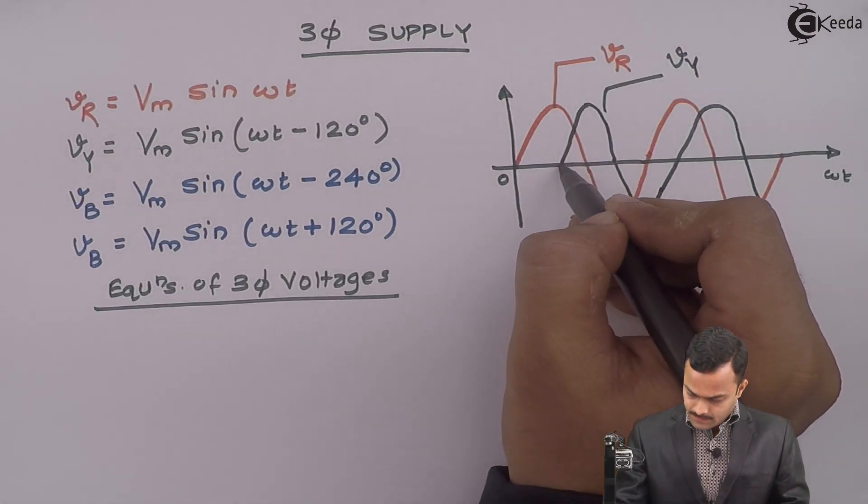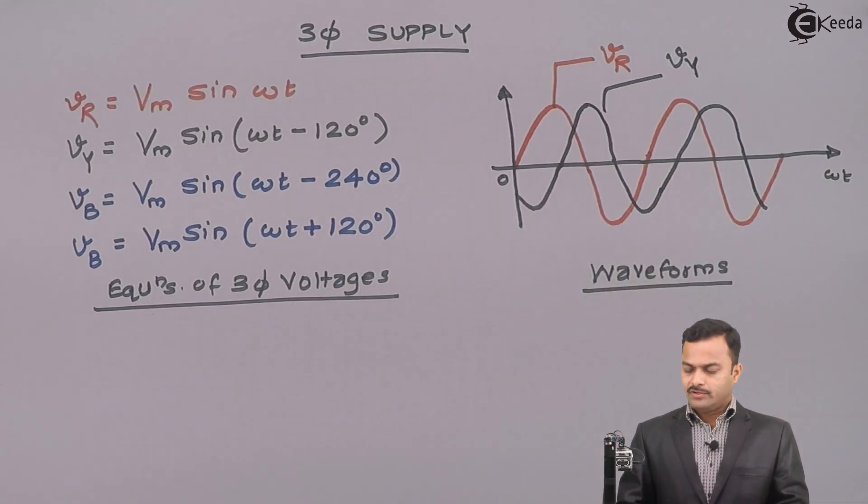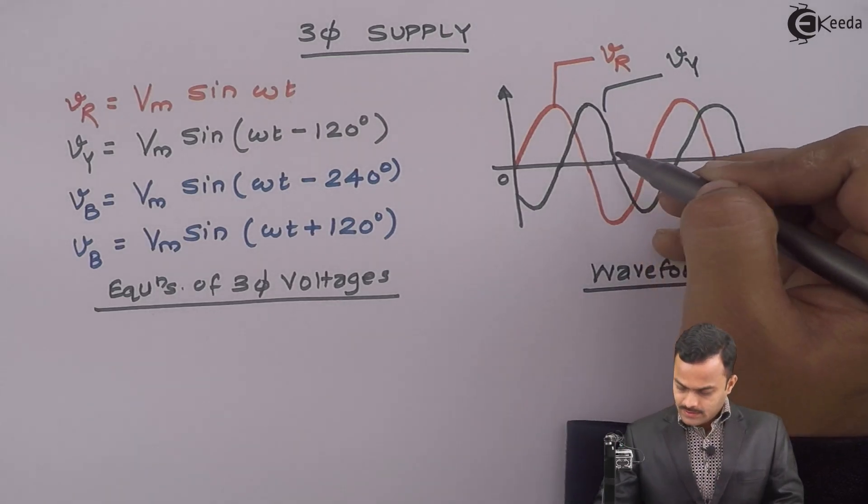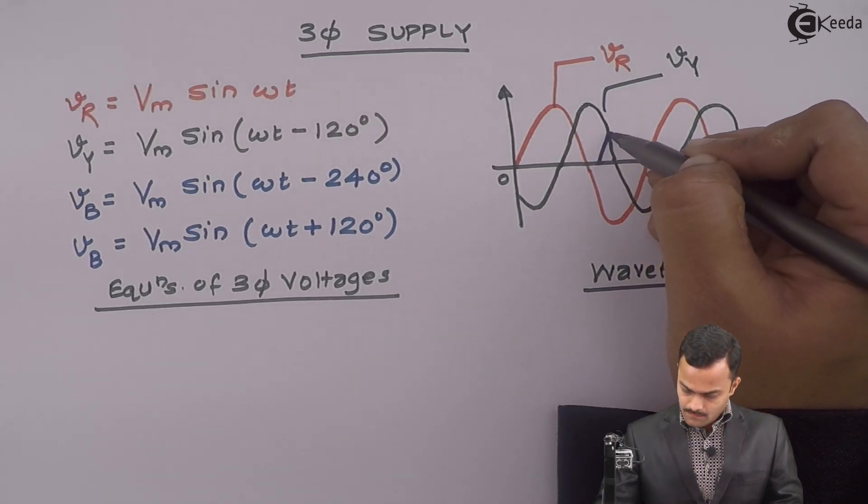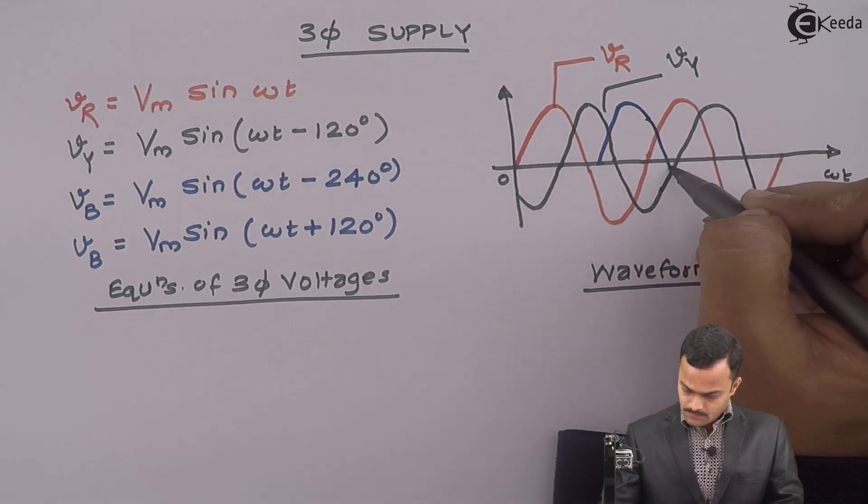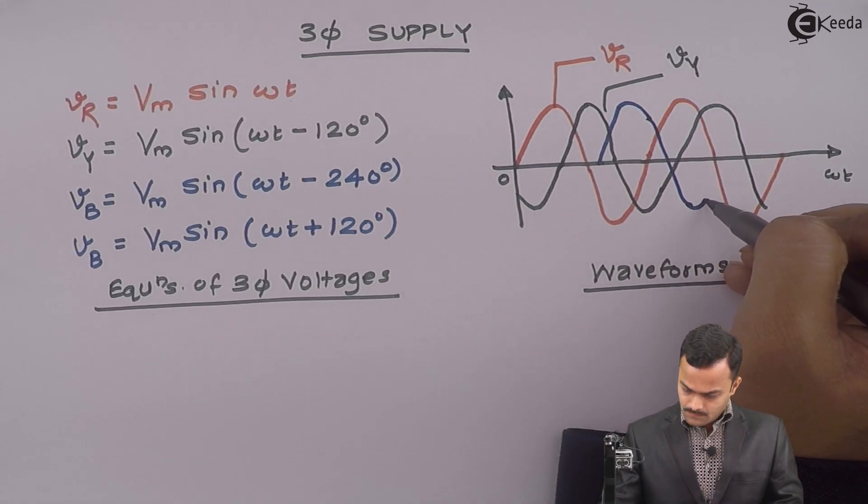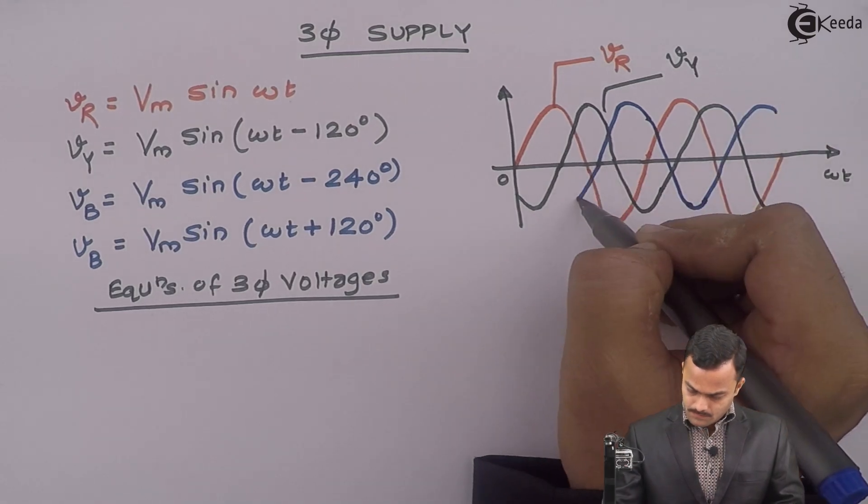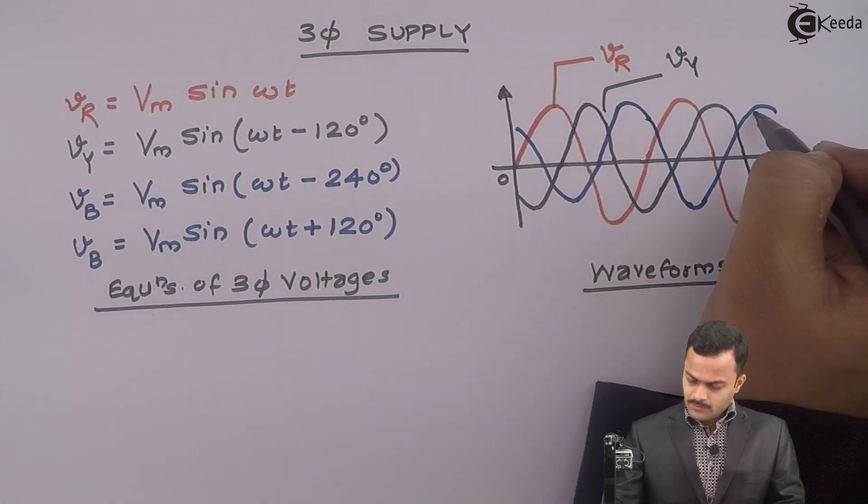If I extend, it will be like this Vy. So, Vb will be the voltage which will lag Vy by 120-degree. So, it will be like this. This will be Vb.